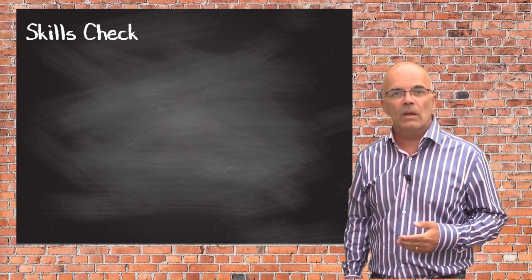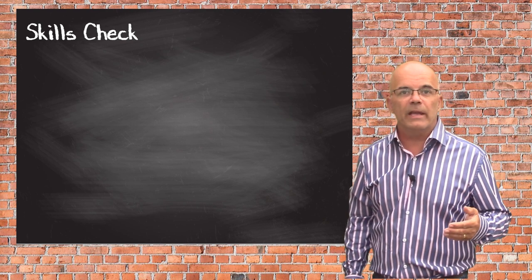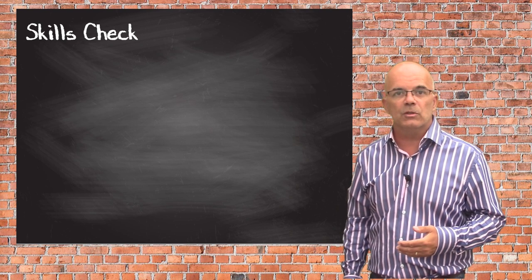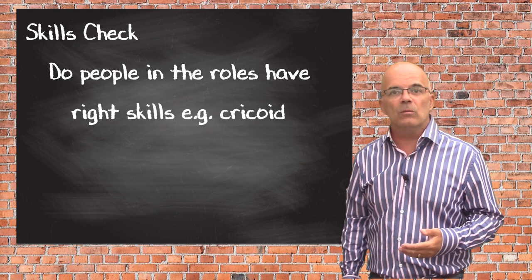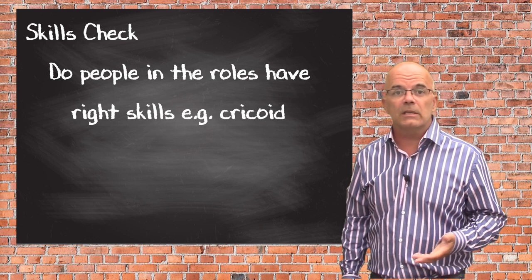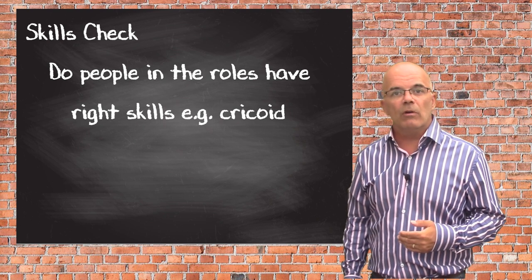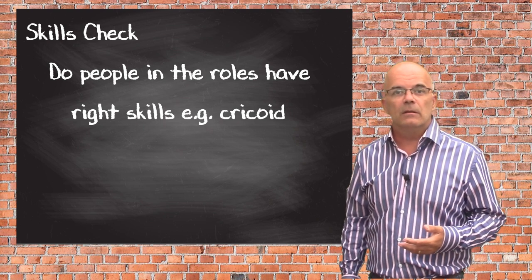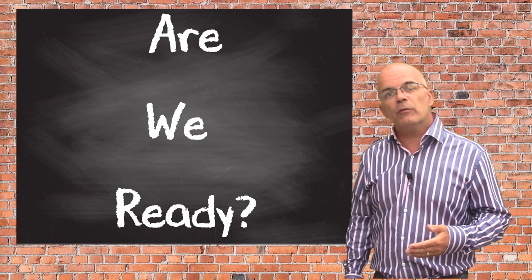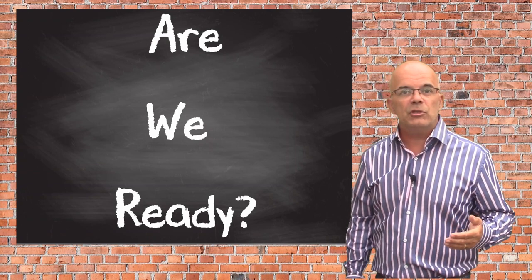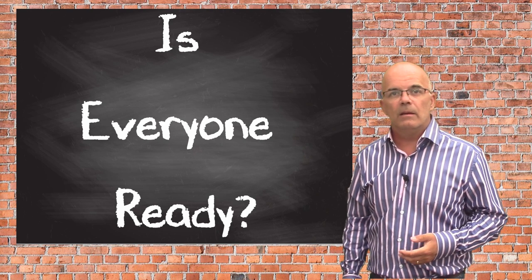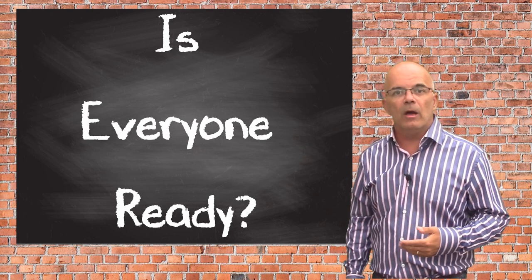Skills check: an intubation can be a stressful environment and preparing for one will often get the adrenaline flowing. You need to be sure that the people in their roles can do what you ask them to. A common problem is that someone asked to do cricoid is not actually sure of the landmarks or the pressure needed — sometimes they can make the whole process much more difficult. Make it clear that you would rather know if someone doesn't know how to do something. Are we ready? If we have run through the checklist properly, we should be. Verbalise to the whole team that you are starting — get an answer from everyone, then let them know you are beginning.